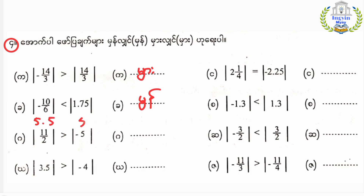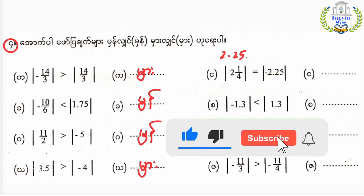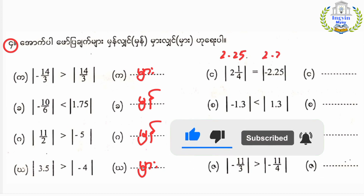The modulus of minus 5 is equal to 5. Number 4: the modulus of 3.5 is equal to 3.5. Number 4: minus 4 is equal to 4. If you write number 4, minus 4 equals 4. Modulus of 2.25: minus 2.25 is equal to 2.25.